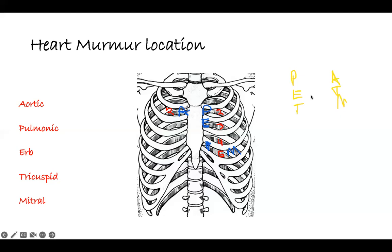So the actual locations: the aortic sound is on the second intercostal space, right — it's in the second. So it's second intercostal space — ICS. Where is it? This is your left side because that's where your heart is, this is your right.